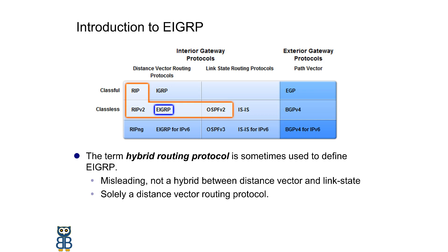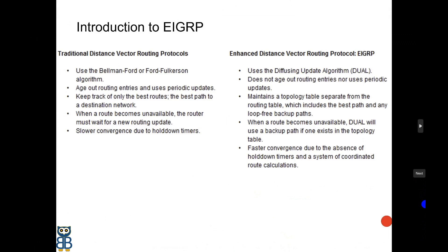Let's see the difference between traditional distance vector routing protocol and enhanced distance vector routing protocol. Traditional distance vector uses the Bellman-Ford or Ford-Fulkerson algorithm, follows age-out entries, and uses periodic updates to update neighbors. When a route becomes unavailable, the router must wait for a new routing update from neighbors, leading to slow convergence due to the hold down timer. The enhanced version is designed to use the Diffusing Update Algorithm, or DUAL.